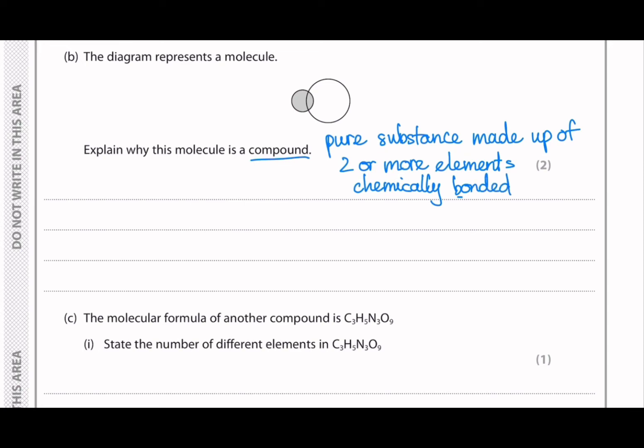And so the answer for this question, we'll have to write two bullet points because it is a two mark question. So the first bullet point would be the fact that it is two different elements because the size of the two circles are different. And the second bullet point is that they have to be chemically bonded to each other.